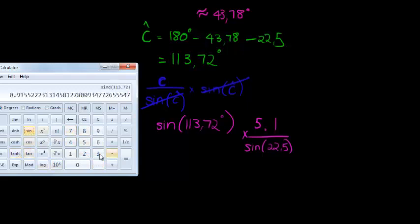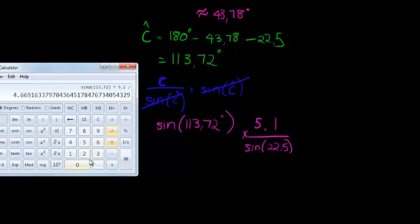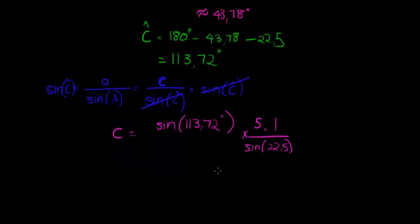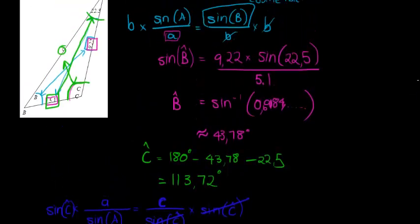Computing that on the calculator: sine of 113.72 times 5.1, divided by sine of 22.5, gives approximately 12.2. So the length of C is approximately 12.2.